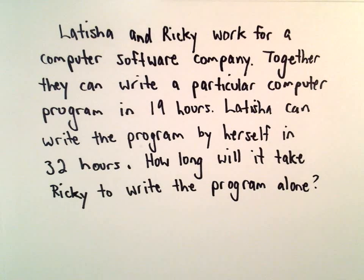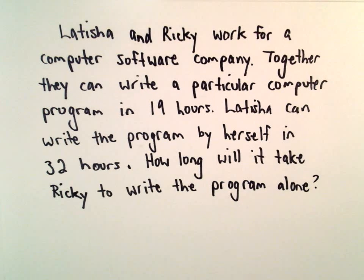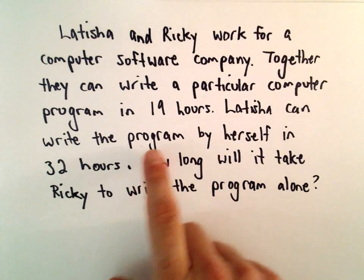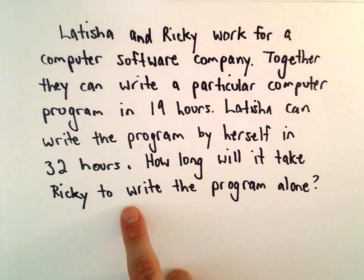Here we're going to look at an example involving work and rates to get a job done. We've got Letitia and Ricky. They work for a computer software company. Together they can write a program in 19 hours. Letitia can do the program by herself in 32 hours. We want to know how long it would take Ricky to write the program all by himself.